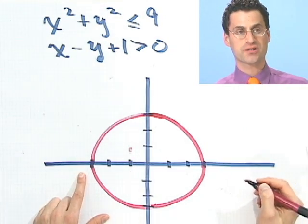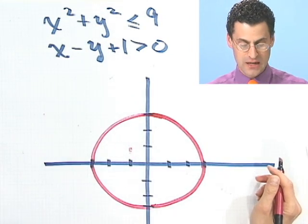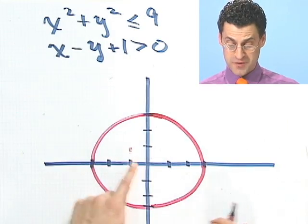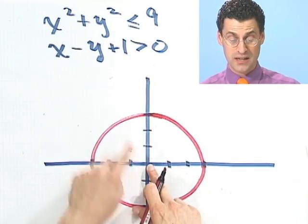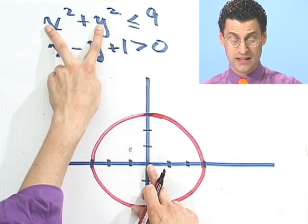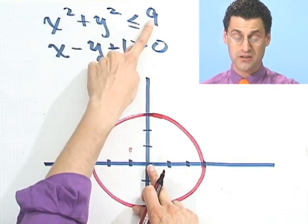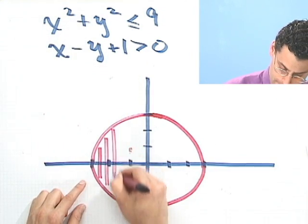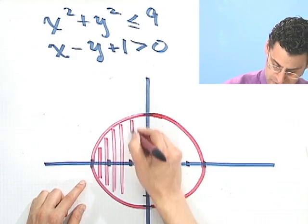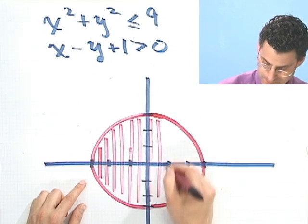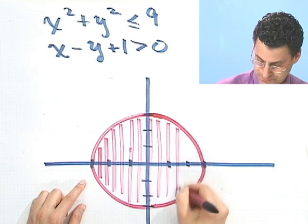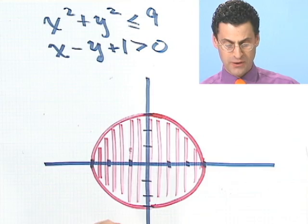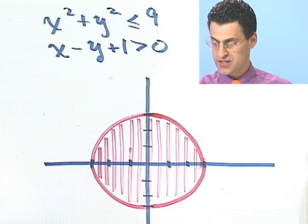That's supposed to be a circle — medium quality, let's say. Now do I fill the inside or the outside? I pick the origin and plug it in: zero less than or equal to nine — that's true, so I shade the inside of the circle.